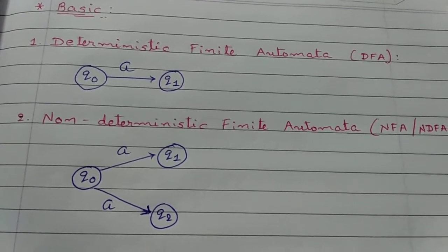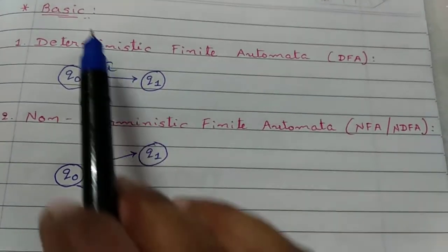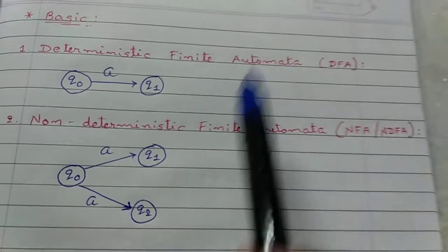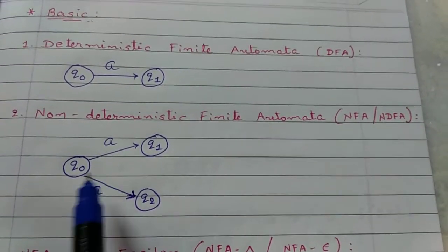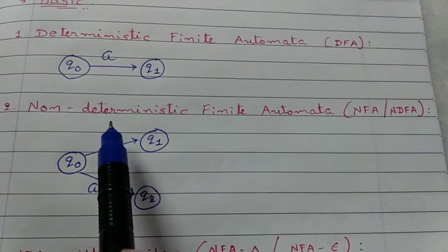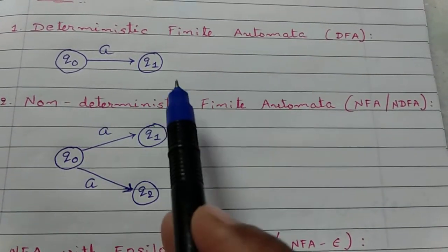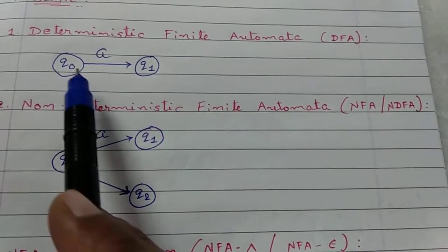First one is DFA. What is deterministic finite automata? In DFA, you have only one option to reach from one state to other state.